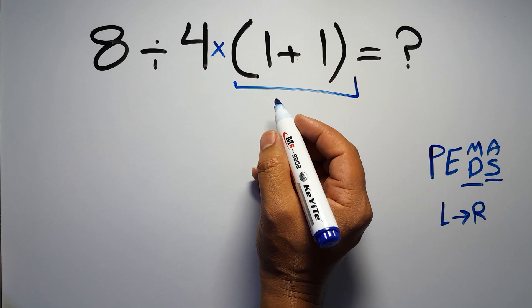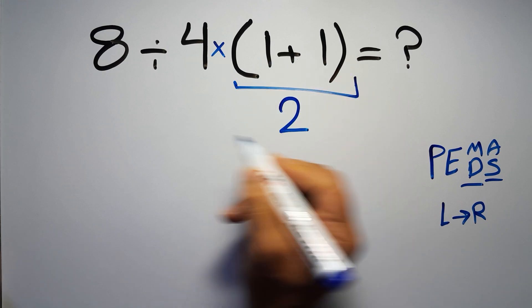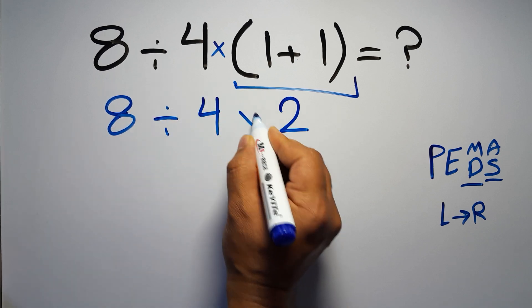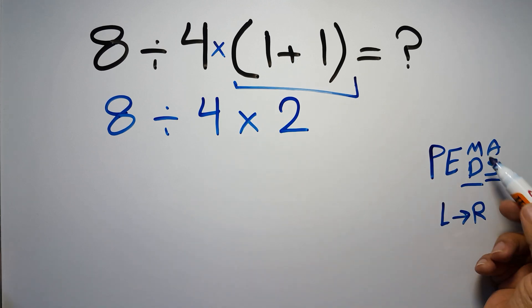Inside this parentheses we have 1 plus 1, which gives us 2. So 8 divided by 4, then times 2. Now we have 1 division and 1 multiplication. As I said, multiplication and division have equal priority and we have to work from left to right.